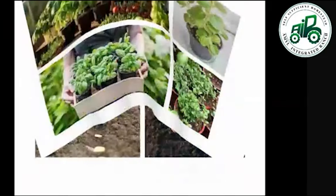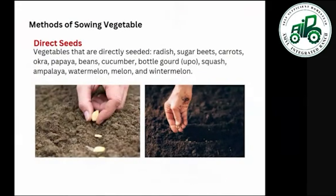Methods of sowing vegetables: the first is direct seeding. Vegetables that are directly seeded include radish, sugar beets, carrots, okra, papaya, beans, cucumber, bottle gourd, squash, bitter gourd, watermelon, melon, and winter melon.